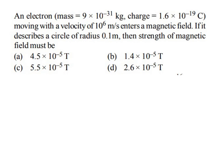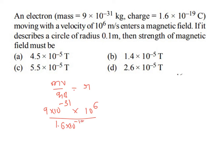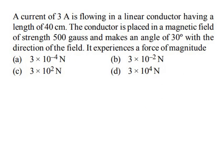Next problem: an electron (mass 9×10⁻³¹ kg, charge 1.6×10⁻¹⁹ C) moves with velocity 10⁶ m/s and describes a circle of radius 0.1 m in a magnetic field. Using mv/qB = r: B = mv/(qr) = (9×10⁻³¹ × 10⁶) / (1.6×10⁻¹⁹ × 0.1) = 5.5×10⁻⁵ tesla. Option C is the right answer.